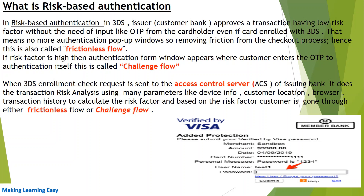When the merchant application sends a request to the access control server (ACS) to check if the card is enrolled with 3DS, the ACS performs transaction risk analysis using many parameters such as device information, customer location, customer browser information, and transaction history to calculate the risk factor. Based on the risk factor, the customer goes through either frictionless flow or challenge flow.